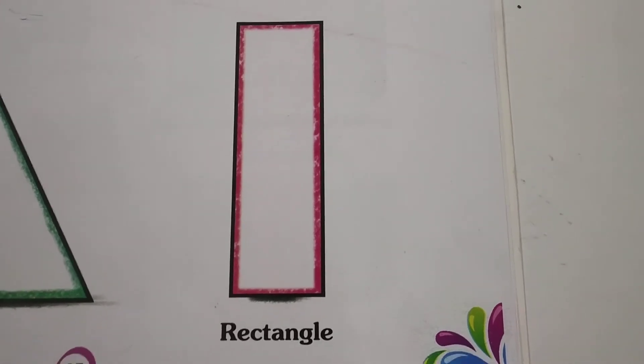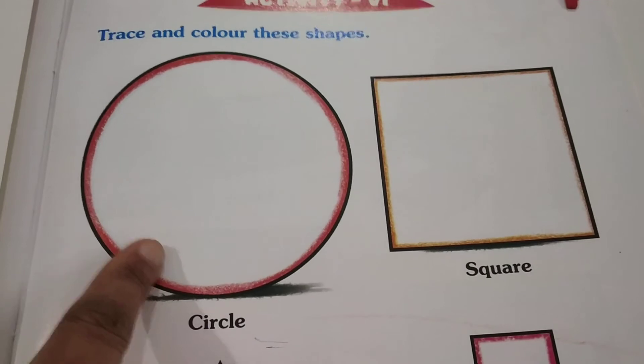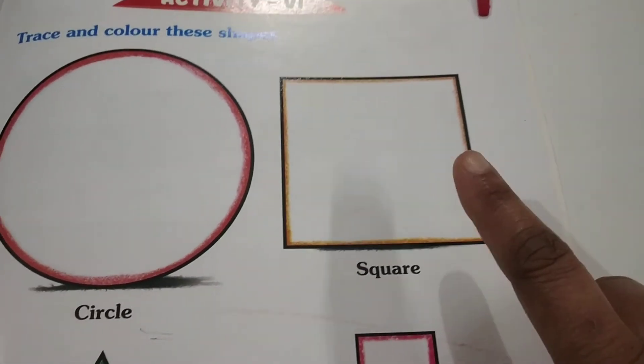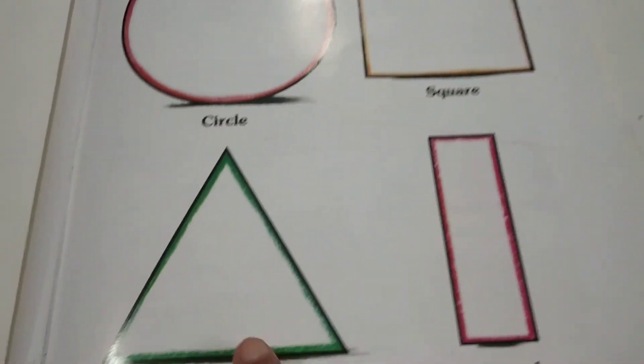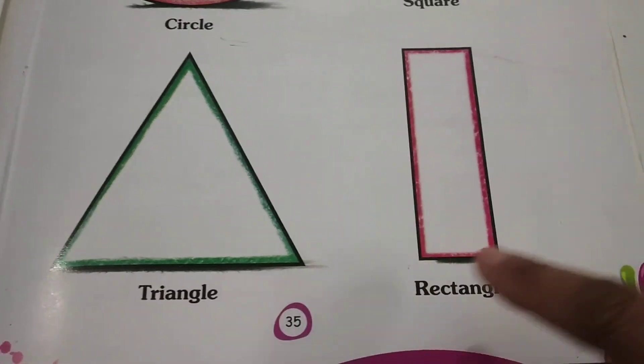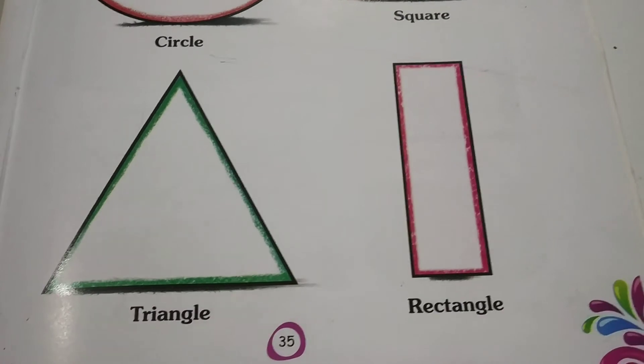Let's repeat: circle, circle, circle. Square, square. Triangle, triangle, triangle. Rectangle. Learn these shapes, kids.